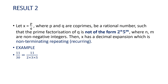If the denominator is not of the form 2 to the power n into 5 to the power m, then the decimal expansion is non-terminating and repeating. For example, 11 by 30 has factors 2, 3, and 5 in the denominator — the factor 3 is extra, so without calculating, we can directly say the decimal expansion is non-terminating and repeating. I hope you liked the video. Thank you so much for watching.